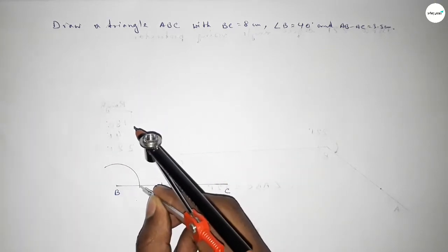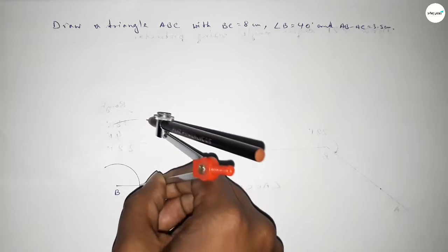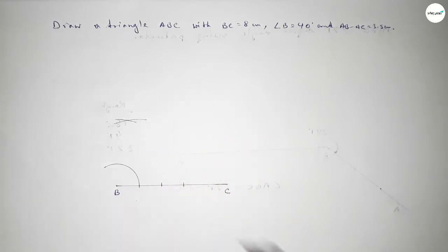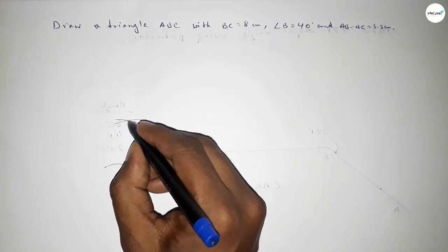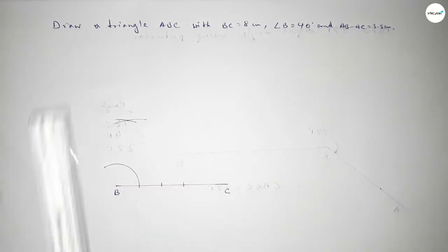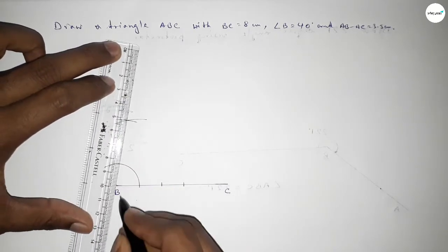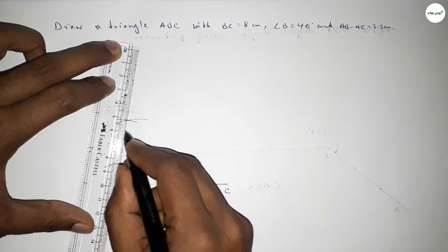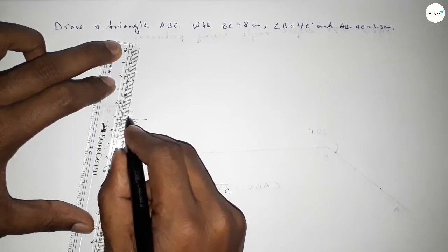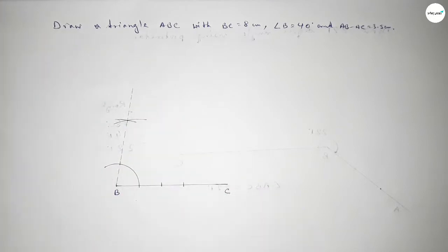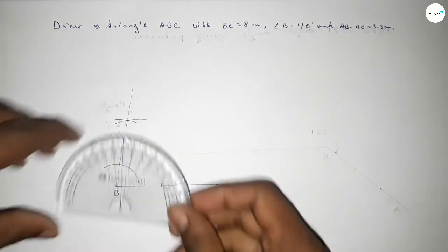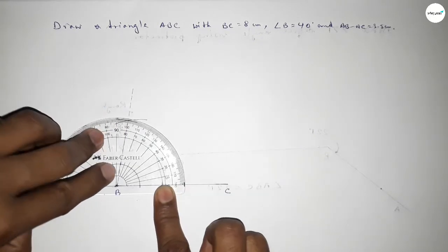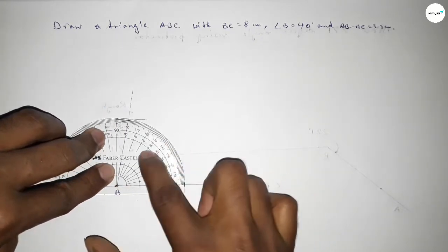Putting the compass there and drawing an arc, with the same length putting the compass here and cutting. Both curves intersect at a point. Joining this to get 80 degrees. Now we need to bisect this angle to get 40 degrees. Checking — this is perfectly 80 degrees.